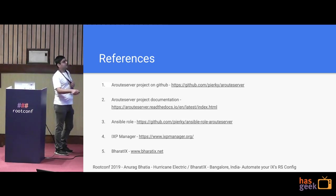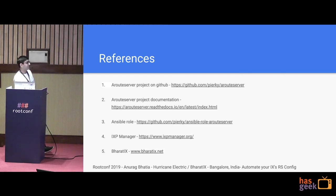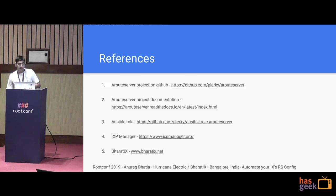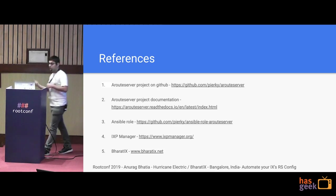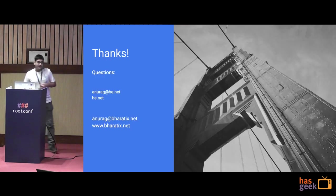Quick references: the ARoute Server project is available on GitHub along with documentation on Read the Docs, and the Ansible role is linked there. If you want something more advanced, IXP Manager includes all the features of a route server plus a web UI, port graphing of members, and much more. And of course, the link to Bharat IX — if you're running an IP network, please feel free to contact me and peer at the exchange. We are trying to make it work at a community level. That's all. Thank you. Any questions?